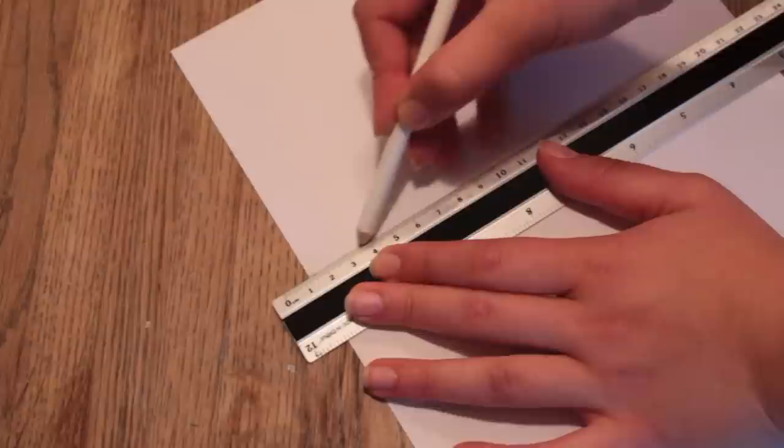Now start out by making a rectangle that's 10 centimeters on one side and 12 centimeters on the other side, and then cut it out. And this will be your stencil for your honeycomb.